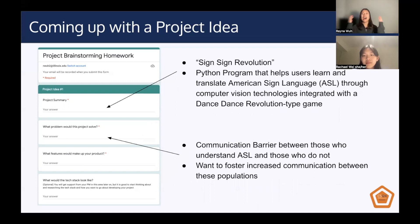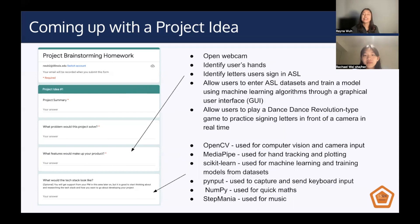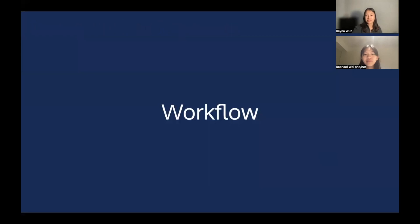Once you have all those things figured out, you can actually summarize the product and name the project. This project was named Sign Sign Revolution — like Dance Dance Revolution — and it is a Python program that helps users learn and translate American Sign Language through computer vision technologies integrated with a Dance Dance Revolution-type game. After you have all those pieces, you can put them together into an actual idea. You really are not limited in what you choose to do, and you have a lot of creative freedom here.